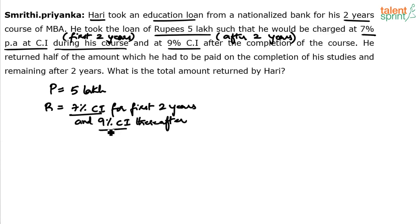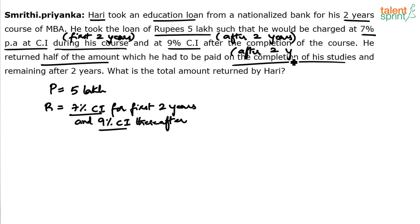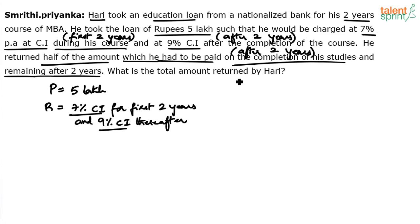For the first two years it is 7%, and after that it is 9%. Now, how was the amount repaid? He returned half of the amount which had to be paid on the completion of his studies — meaning after two years. He paid half of the amount after two years, and the remaining half after two more years. What is the total amount returned by Hari?